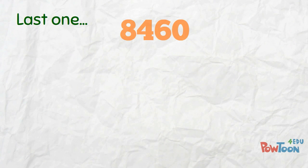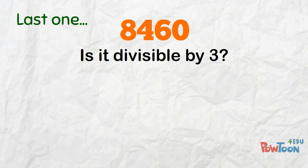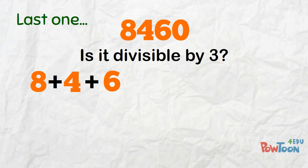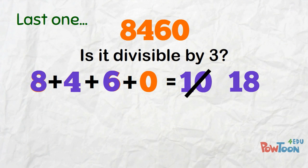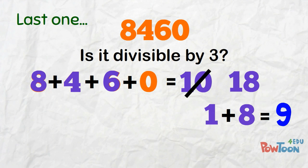Last one — 8,460. Is it divisible by 3? Split it up to add the digits: 8 plus 4 plus 6 plus 0. 4 and 6 is 10, plus 8 is 18 — and I can just ignore the 0. And from 18, 1 plus 8 is 9. So yeah, we know it IS divisible — 3 is a factor!